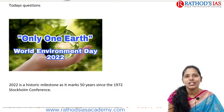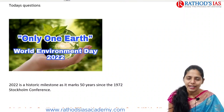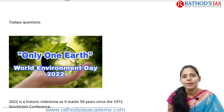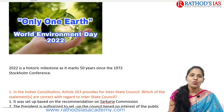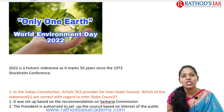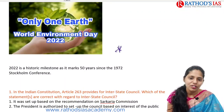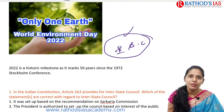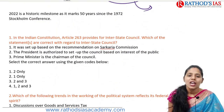Today is June 5th, which is World Environment Day. Every year we celebrate World Environment Day on June 5th, and this year's theme is 'Only One Earth.' The speciality of 2022 is that it marks 50 years since the 1972 Stockholm Conference. Students are expected to refer to facts regarding the Stockholm Conference, as questions may appear in prelims and upcoming mains.